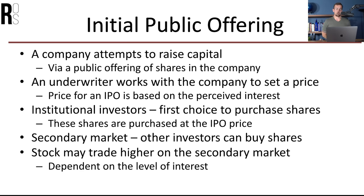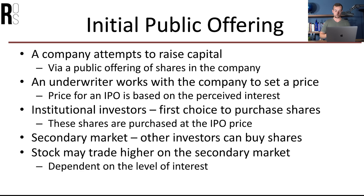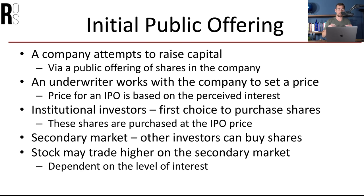How does the IPO process work? You have somebody called an underwriter who works with the company to set a target price per share. The price for an IPO is based on the perceived interest in the public offering. For example, Airbnb had an IPO this year — people were pretty interested, so the perceived interest was high and the share price was higher. But the interesting thing is that you don't even have the opportunity to buy these shares at the IPO price, because institutional investors have the first choice to purchase shares at the actual IPO price.